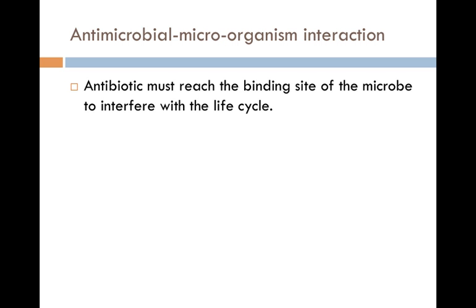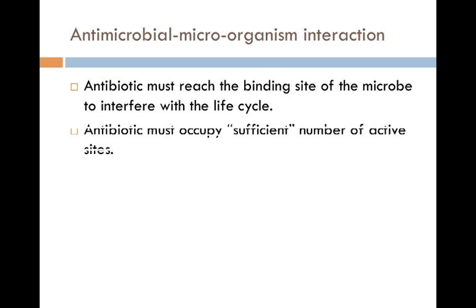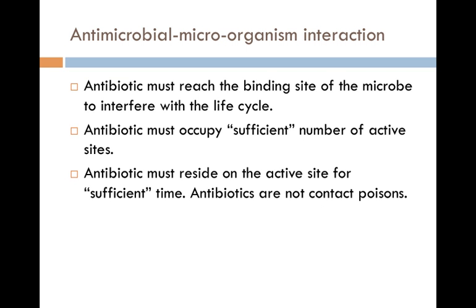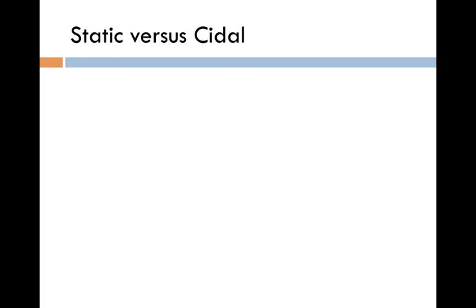An antibiotic must reach the binding site of the microbe to interfere with its life cycle — that's how they work. They have to get to the microbe itself or else they won't do anything. And they must occupy a sufficient number of those active sites to either inhibit or kill the bug. It must reside on that active site for enough time. Antibiotics are not contact poisons — they don't just touch the bug and kill it.